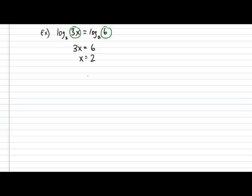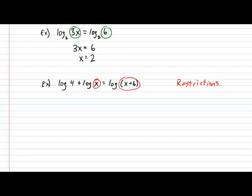Let's take a look at a more complicated example. Suppose I ask you to solve x in the following: log of 4 plus log of x is equal to log of x plus 6. First, before you do anything, make sure you check the restrictions on these objects. We have to guarantee that x is larger than 0, and that x plus 6 is also larger than 0. X larger than 0 is already handled, but x plus 6 larger than 0 means that x must be larger than negative 6.